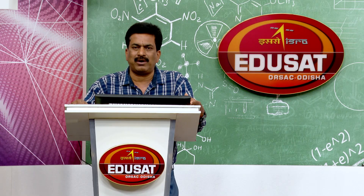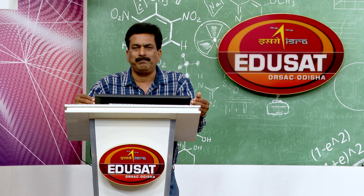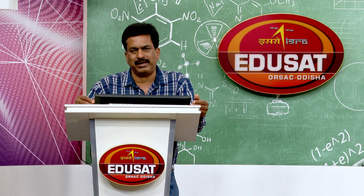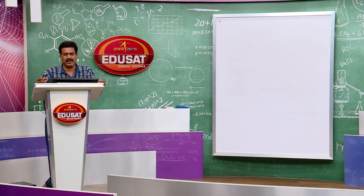Today we are going to discuss two things which are probably the last part of the magnetic effect of electric current. The first is the torque or couple due to the rotation of a rectangular current-carrying conductor, and the second is the moving coil galvanometer (MCG) — M stands for moving, C for coil, G for galvanometer — and how it is converted from a galvanometer to an ammeter or a voltmeter.